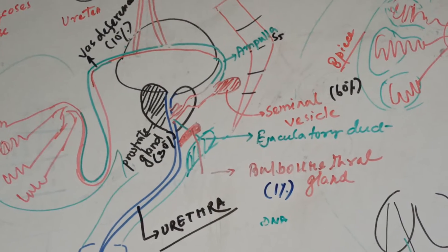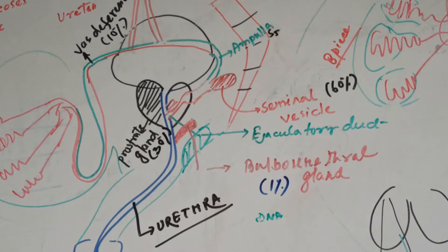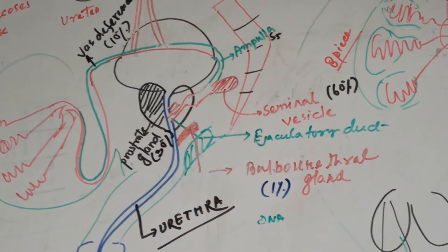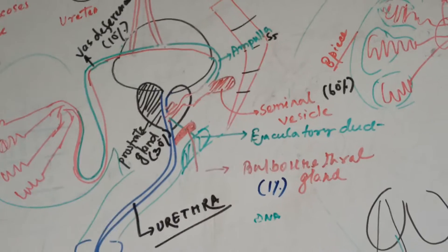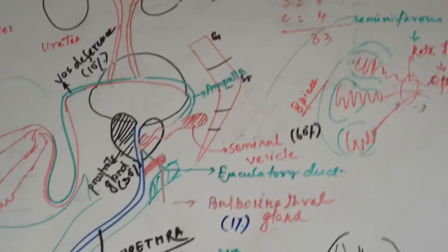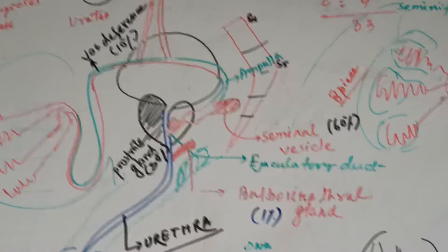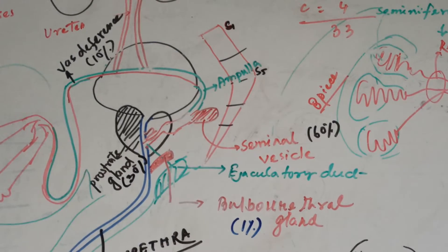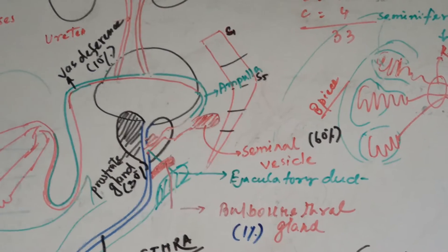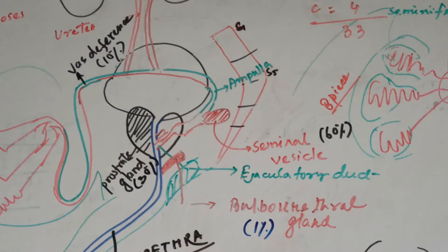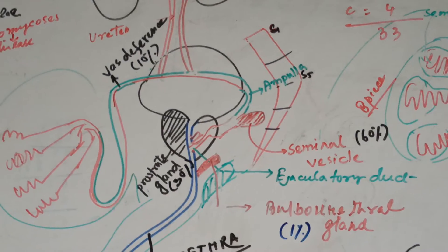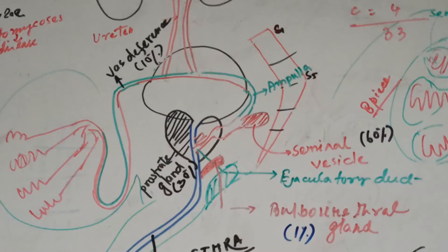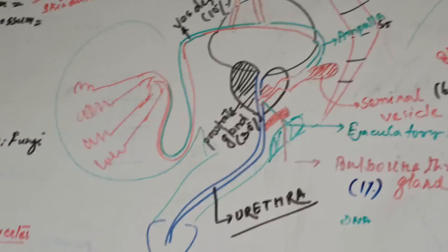The seminal vesicles are also in the same place where the prostate gland is located. Next is the bulbourethral gland. This gland is basically ejecting a fluid that makes up the semen: 60% from the seminal vesicles, 10% from the bulbourethral gland, and the sperm is produced from the seminiferous tubules.